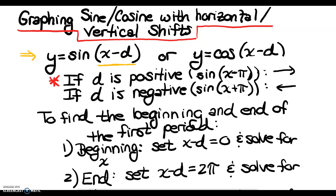I've written up here y equals sine of x minus d and y equals cosine of x minus d. As with all functions, when we have a value inside parentheses that's being added or subtracted from the x value, there is a horizontal shift associated with it. If d is positive, like x minus a positive pi, that is a shift to the right. If d is negative, we can rewrite this as x minus a negative pi — that's a shift to the left.